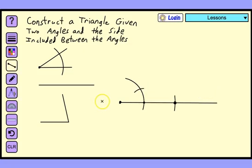Now draw the second side of the triangle from one endpoint of the line segment through this intersection of arcs you just made, and we'll make it longer than it needs to be.